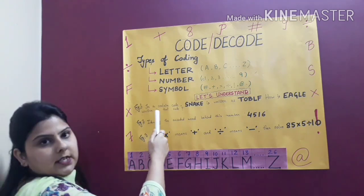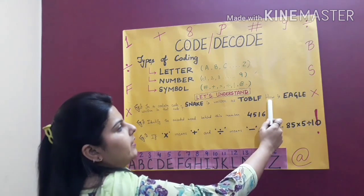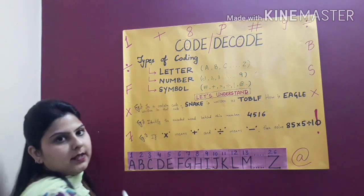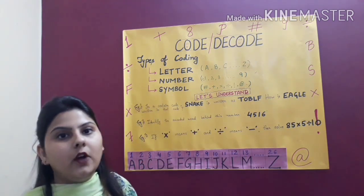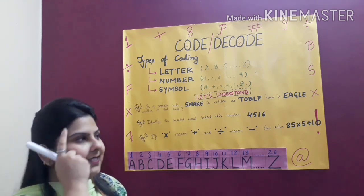It says in a certain code SNAKE is written as this. Then how is EAGLE written in that code? Now let us try to observe what coding technique they have applied. Think, think.